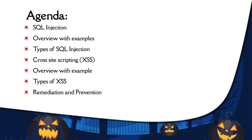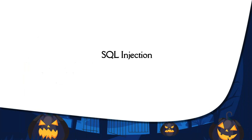Today's agenda looks really simple. I'll be starting off with SQL injection, giving you a brief summary about what exactly SQL injection is, with different examples and the different types. Then I'll move over to cross-site scripting, also known as XSS, covering an overview with examples and different types. At the end I'll wrap up this webinar with remediation and prevention techniques.